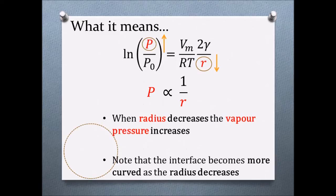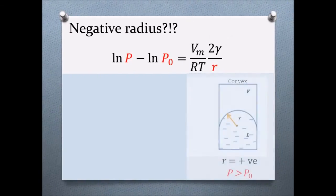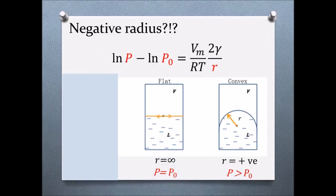Note that the interface becomes more curved as the radius decreases. For a convex surface, such as the water droplet, the radius is given a positive sign because it is measured from the liquid phase, and from the Kelvin equation, it can be seen that its vapor pressure will be greater than its equivalent flat surface.